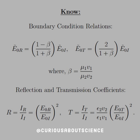Here, β is defined as μ₁v₁ over μ₂v₂, all derived in the book. So if we want the reflection and transmission coefficients, we need the ratio of their intensities, which is the ratio of the real parts of the amplitude squared — E₀ᵣ over E₀ᵢ, squared.